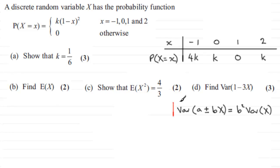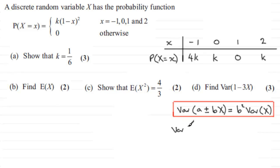Let's put a box around that result, so do try and learn it. Now that means that if we are finding the variance of 1 minus 3x, it is the same as the variance of 1 — the variance of a constant — which is 0. Then we change the minus to a plus; plus or minus makes no difference. We square the value of 3, so that's 3 squared, which is 9 times the variance of x.